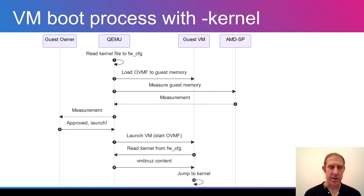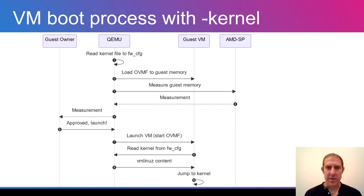Here is the same process in a sequence diagram with all the players. On the left is the guest owner, which is usually outside the cloud provider area. Then we have QEMU, which is untrusted in this setting, and then the guest VM and the AMD secure processor which takes part in the measurement calculation. QEMU reads the kernel file into the firmware config device, loads OVMF into guest memory, and uses the AMD secure processor to measure the guest memory. The measurement goes back to the guest owner, who approves it and tells QEMU to launch the VM. OVMF then reads the kernel from firmware config, and QEMU provides the kernel content, allowing OVMF to jump into the kernel to continue booting.